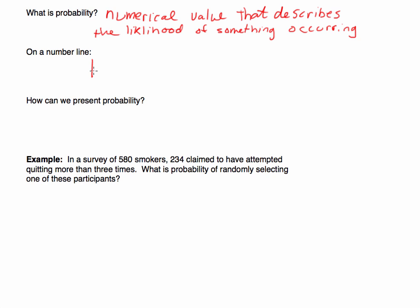On a number line between 0 and 1 — when we talk about a probability, it is a numerical value between 0 and 1. If the probability of an event occurring is 0, it is impossible; the event will definitely not occur.